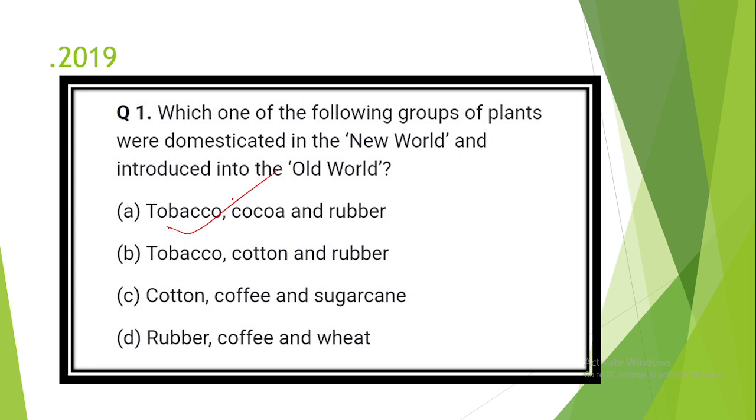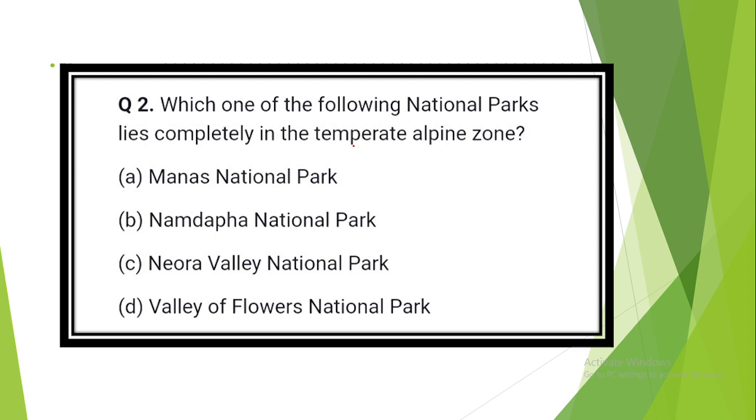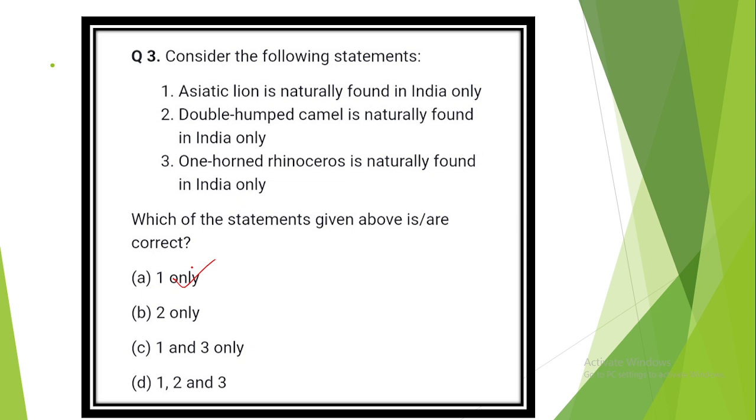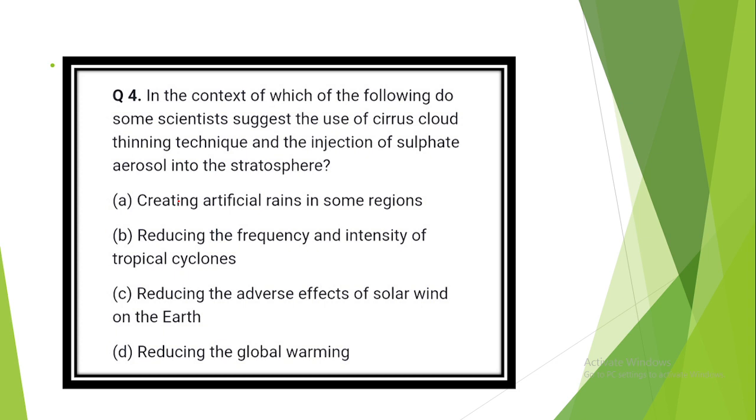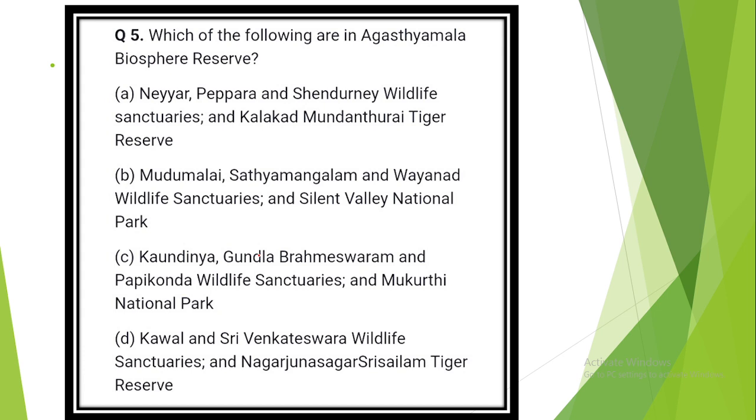Second question. Which one of the following national parks lies completely in temperate alpine zone? Option D: Valley of Flowers National Park. Question number 3. Consider the following statements. The answer is option A. Asiatic lion is naturally found in India only. Double hump camel is naturally found in India only - that statement is incorrect. Third statement is also incorrect. Question number 4. In the context of which of the following do some scientists suggest the use of cirrus cloud thinning technique and the injection of sulfide aerosol into stratosphere? Answer is option D: Reducing global warming.